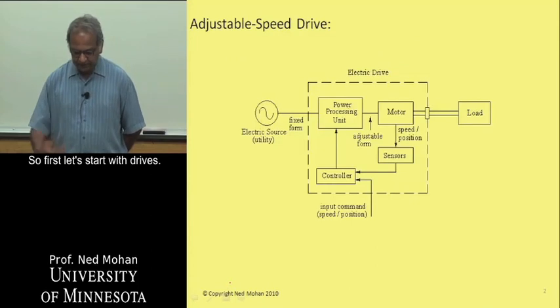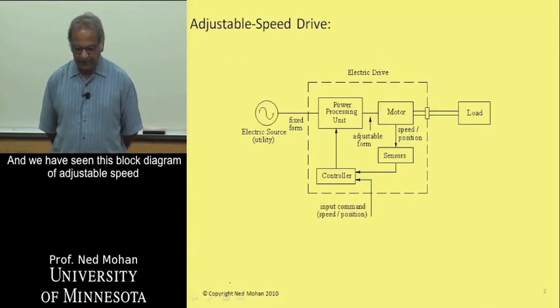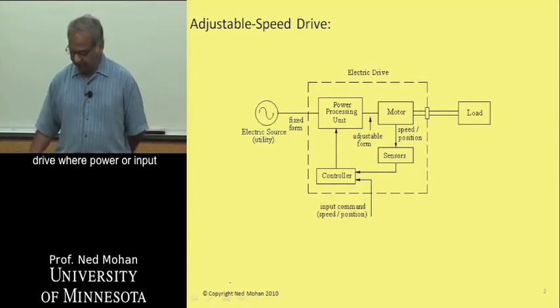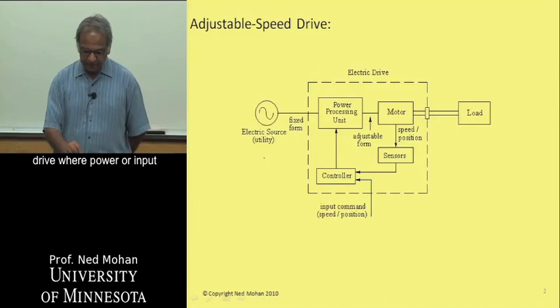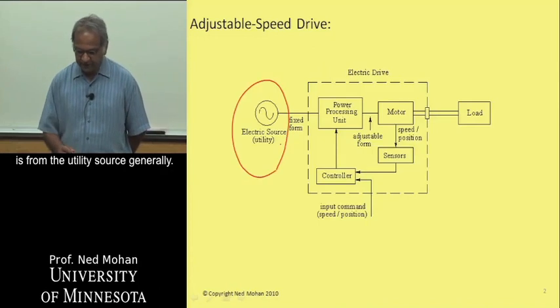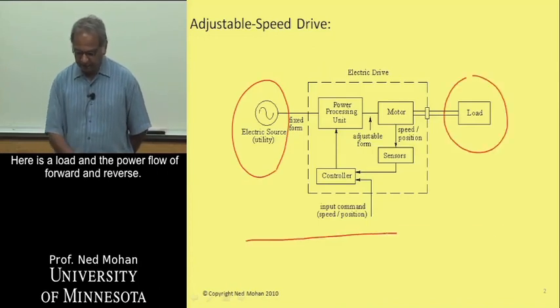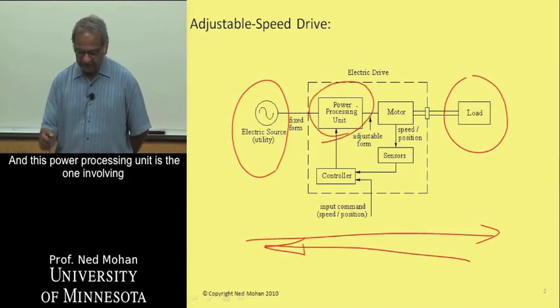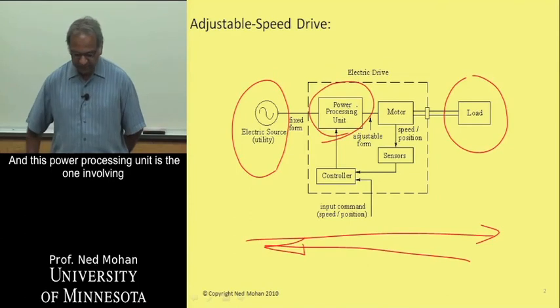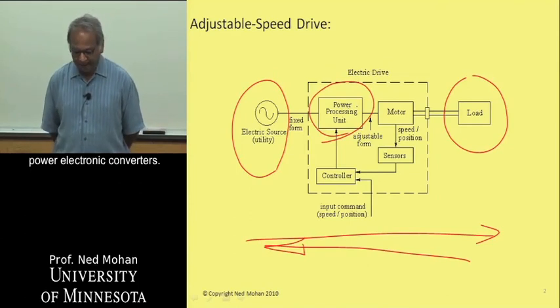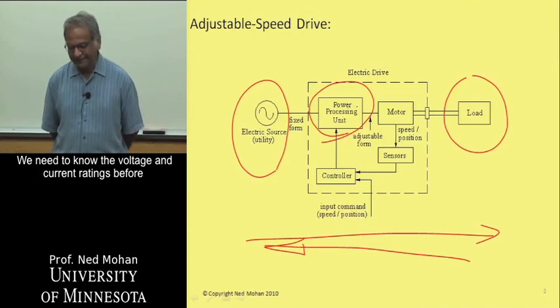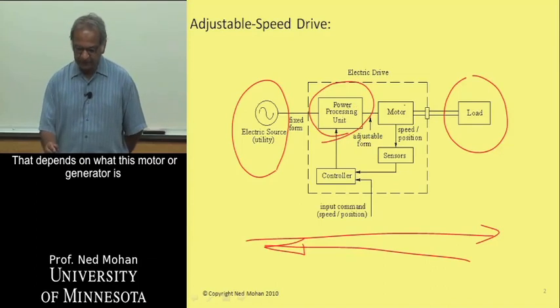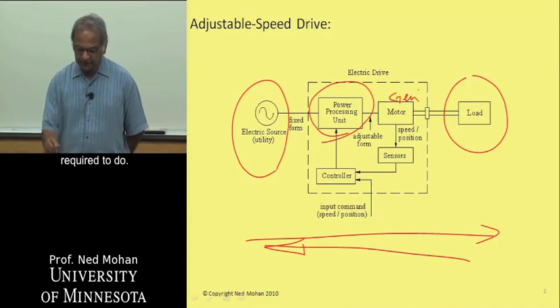So first let's start with drives. We have seen this block diagram of adjustable speed drive where power input is from the utility source generally. And here's the load and the power flow, of course, can reverse. This power processing unit is the one involving power electronic converters, and we need to know the voltage and current ratings before we can determine it. And that depends upon what this motor or generator is required to do.